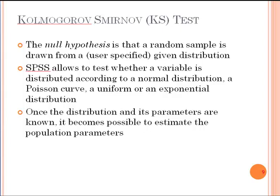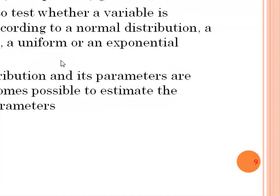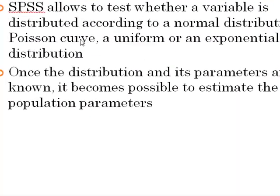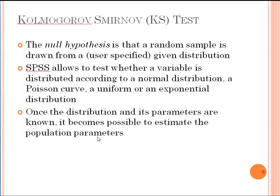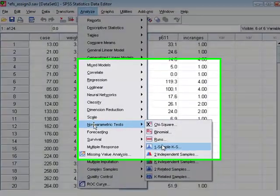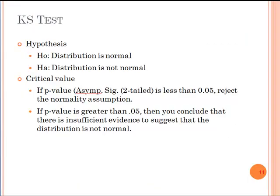The null hypothesis for KS test is that the random sample is drawn and in SPSS when you are administering this KS test you can test for normality or Poisson distribution or a uniform distribution or the exponential distribution. Here we will test normal distribution. You analyze nonparametric tests and you click on one sample K values.